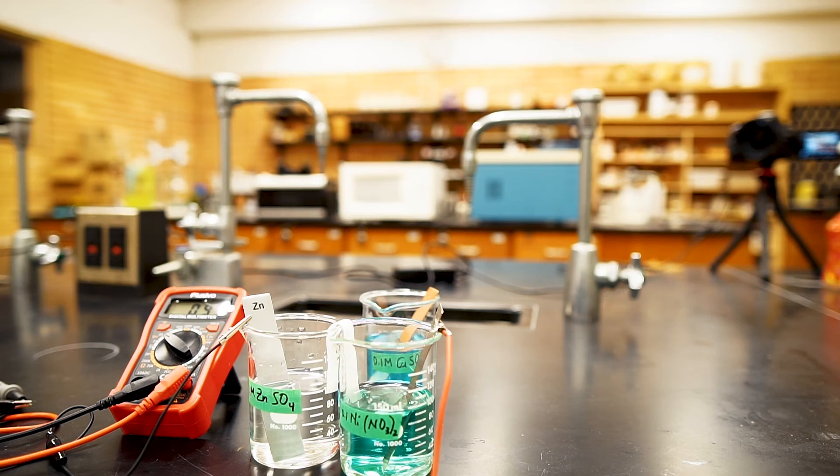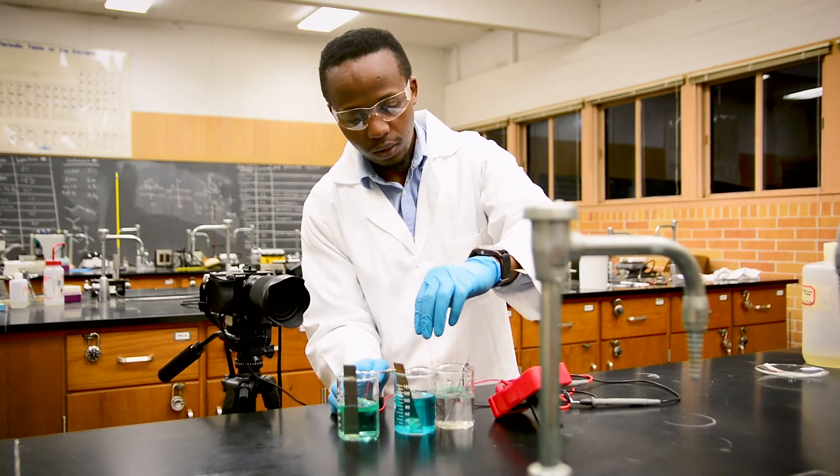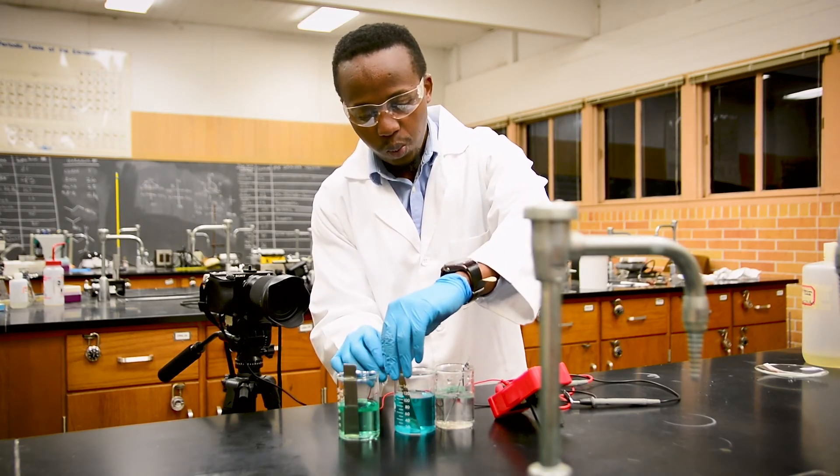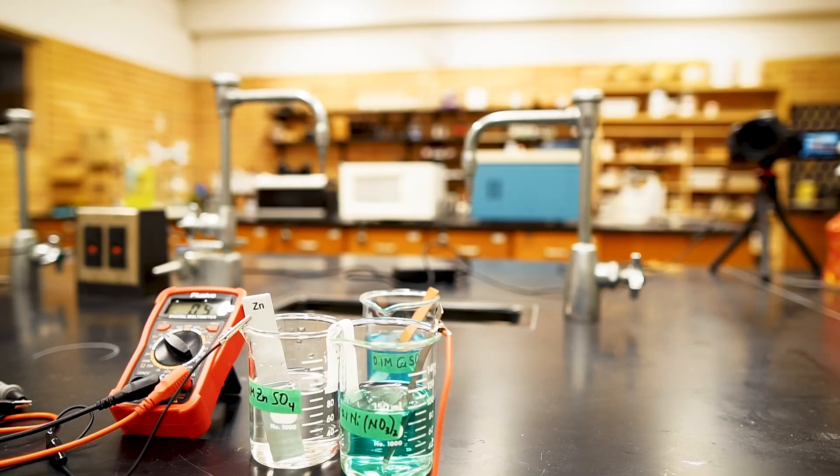So the more half-cells you have, the more pairings you can make. With three half-cells you can make three different galvanic cells. If you have four half-cells, you can make six different cells, and so forth. But you still measure the voltage the same way every time.